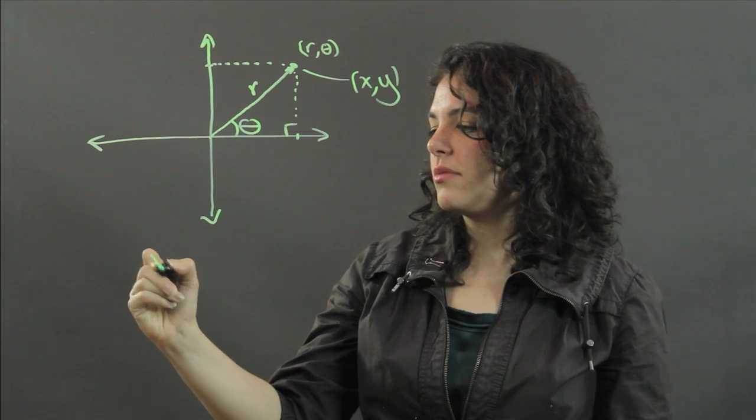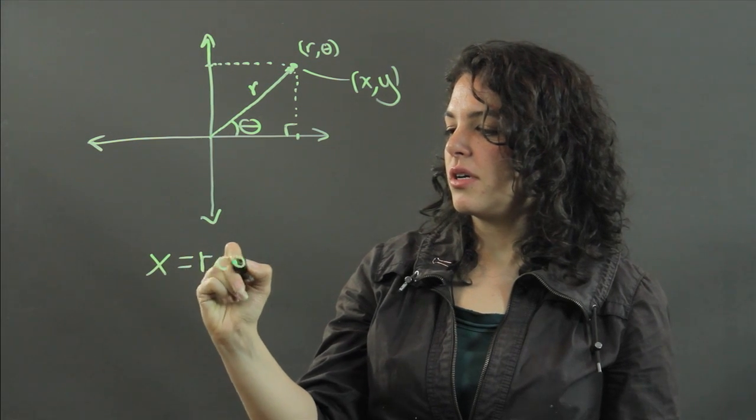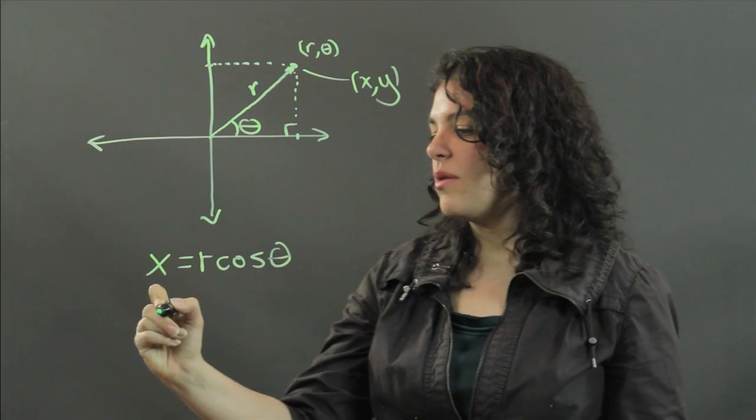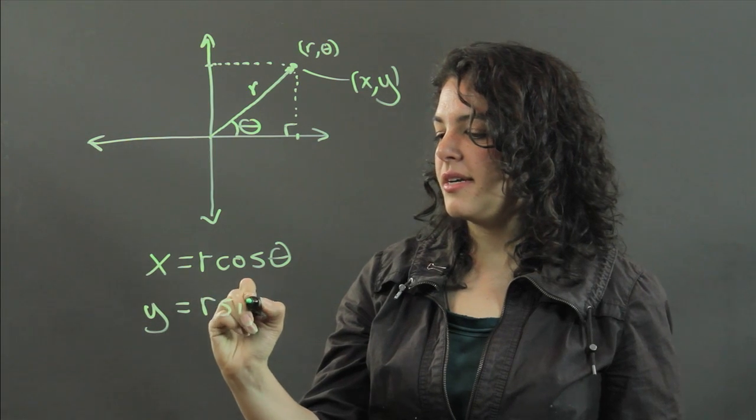So, x is always r cosine theta, and y is always r sine theta.